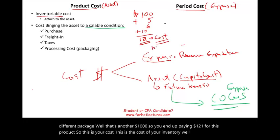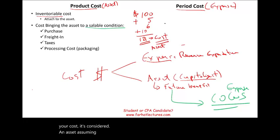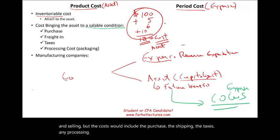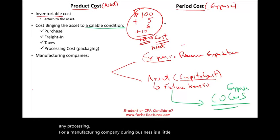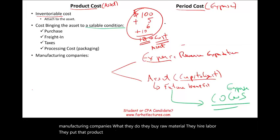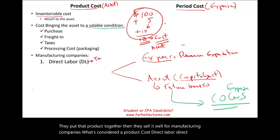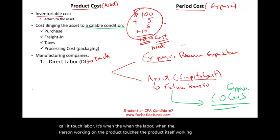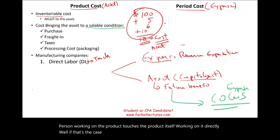The cost would include the purchase, the shipping, the taxes, and any processing. For a manufacturing company, it's a bit different — they buy raw material, hire labor, put the product together, then sell it. For manufacturing companies, direct labor — also called touch labor — is when the person working on the product physically touches it. Any payroll cost for direct labor gets treated as an asset, as part of the product.